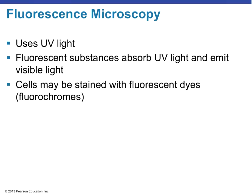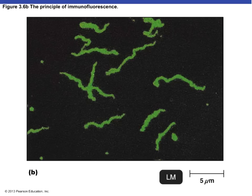Fluorescent microscopy uses ultraviolet light as the light source and is very important for diagnostic purposes. We can stain antibodies with fluorescent fluorochrome dyes, introduce those antibodies into a specimen from individuals suspected of infection — specifically bacterial infections — and those antibodies will attach to the organism and fluoresce. Here is a picture of fluorescent microscopy showing a spirochete, the causative agent of syphilis.